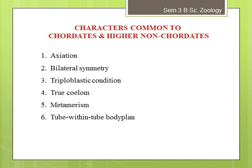The second shared character is bilateral symmetry — due to the anterior-to-posterior axis, the bodies of all chordates and higher non-chordates exhibit bilateral symmetry, divisible into equal halves. The third is the triploblastic condition: during embryonic stages, the embryo is differentiated into three layers — ectoderm, mesoderm, and endoderm. Lower non-chordates have a diploblastic condition with mesoglia instead of mesoderm.